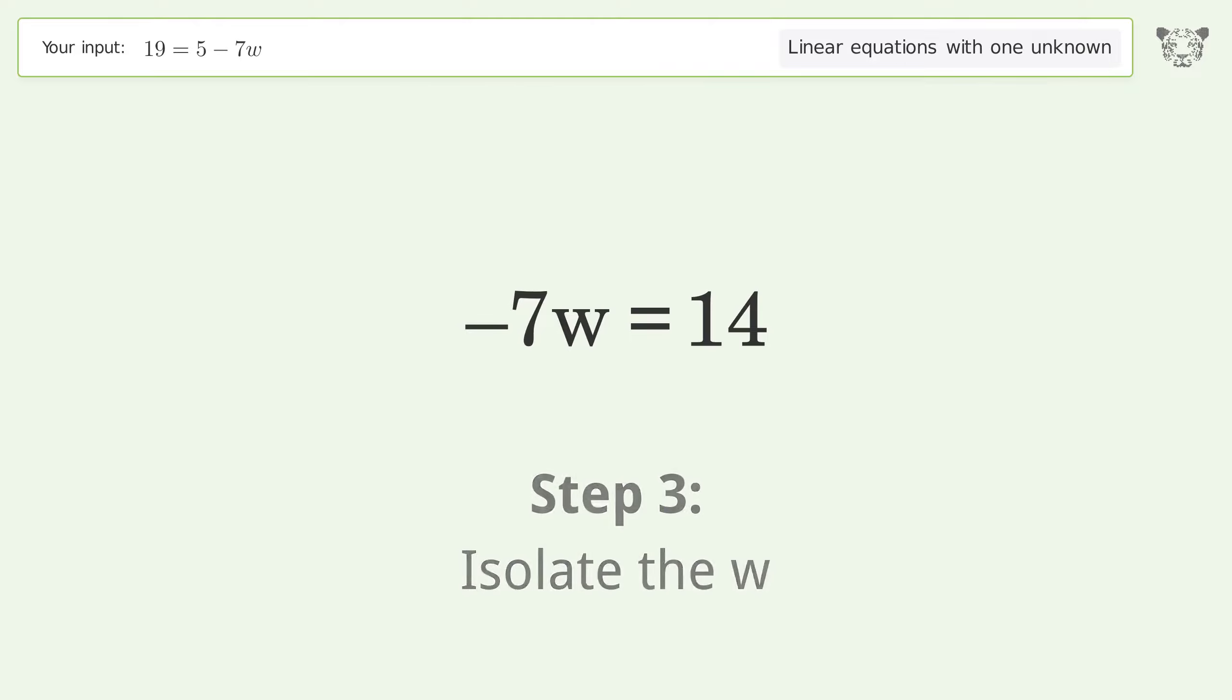Isolate the w. Divide both sides by negative 7. Cancel out the negatives.